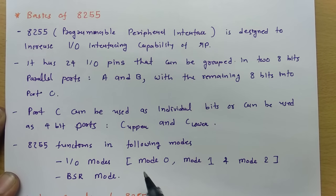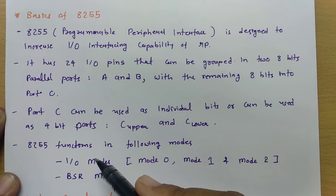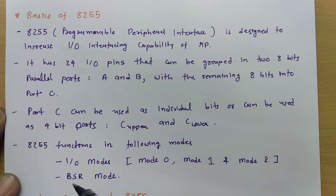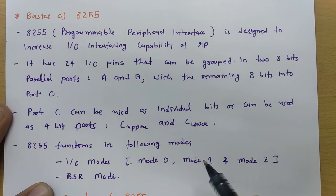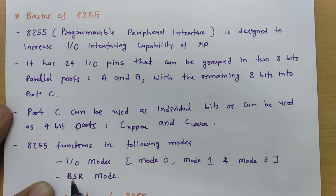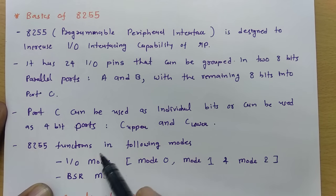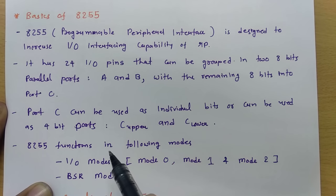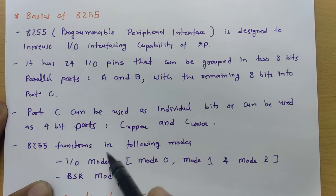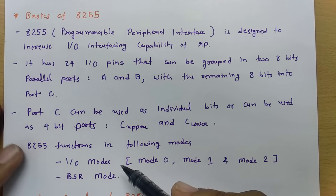8255 functions in two different modes: input-output mode and BSR mode. In input-output mode there are three sub-modes: mode 0, mode 1, and mode 2. BSR means bit set reset mode. These modes will be explained in detail at the end of this session, so stay tuned.